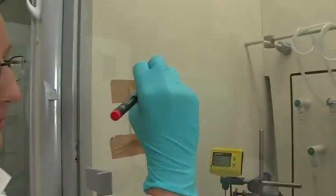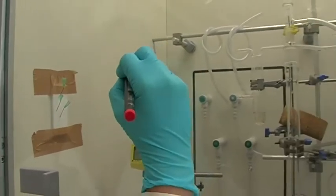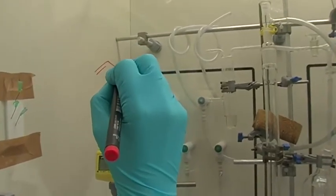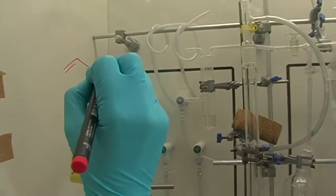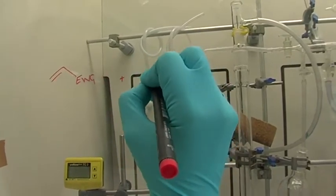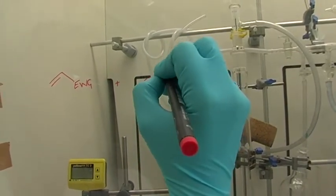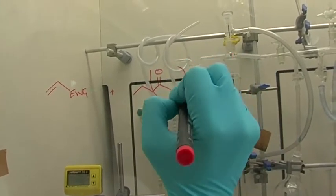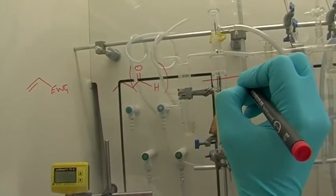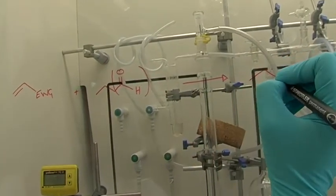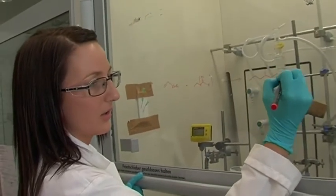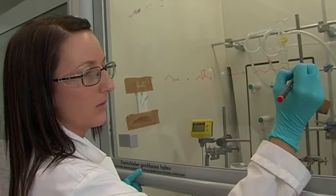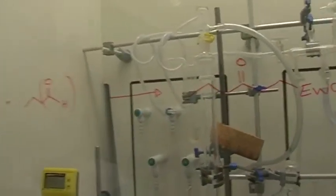I'll just draw for you my chemical reaction that I'll be doing. I essentially have an alkene with an electron-withdrawing group attached, and I also have an aldehyde which I'm going to add. This bit is the aldehyde functionality. What we get as a product is this addition product here, formed via a radical mechanism.